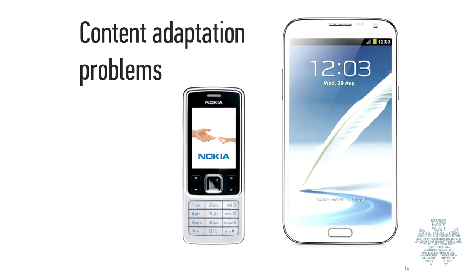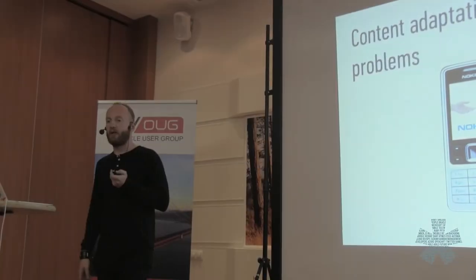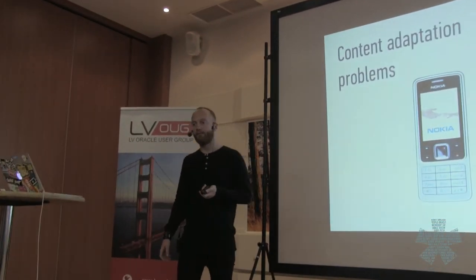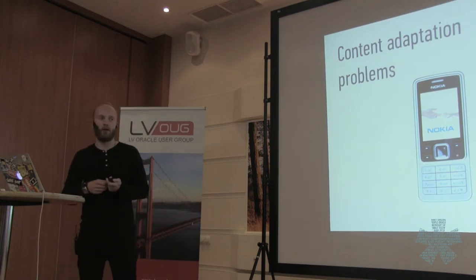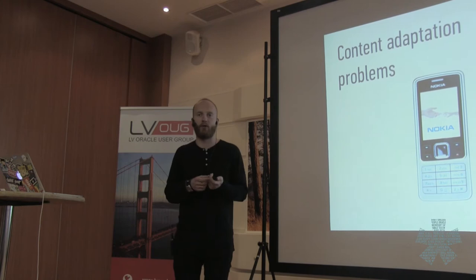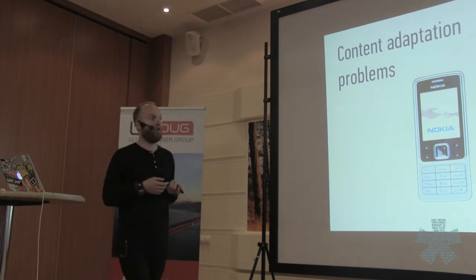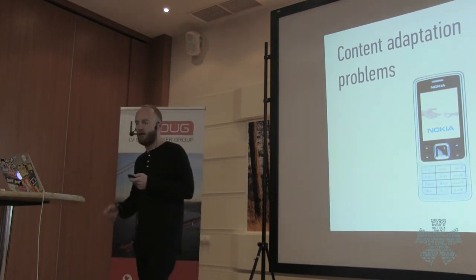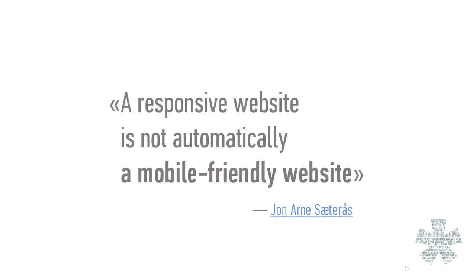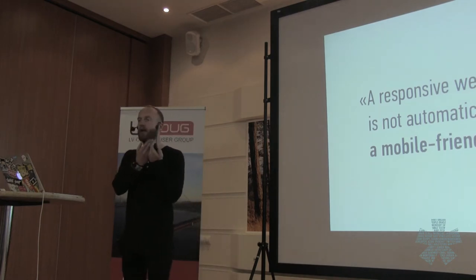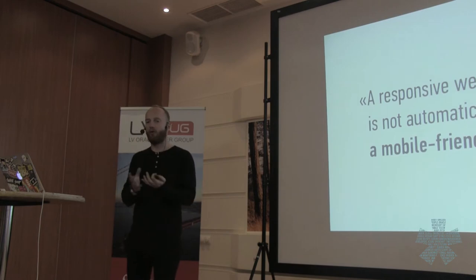Different device types need adaptation for their user contexts. We also have content adaptation concerns — for example, if I have a basic Nokia phone, I probably go to a web page to get only an address or phone number for a company. A mobile-friendly website means it adapts content, layout, and user interactions to all platforms together.